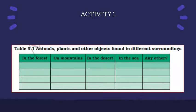There is Activity 1 on page number 80. Let us start with the forest — think of all the plants, animals, and objects that can be found there and list them in column one of Table 9.1. Then list things found in other regions shown in the table: mountains, desert, and the sea. Discuss with your friends, parents, and teachers to find more examples, and also consult books in libraries about animals, plants, and minerals of different regions.